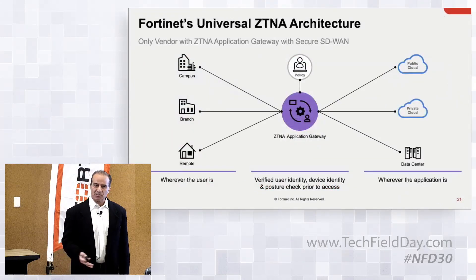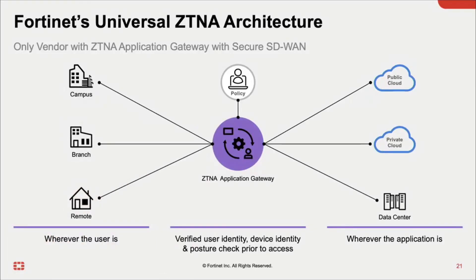To level set on terminology: universal ZTNA has three components — the agent, the policy engine, and the enforcer of that policy, which is the ZTNA Application Gateway. Users can be working from anywhere: remote, in the office, or moving back and forth. They're accessing applications that can also be anywhere. The ZTNA Application Gateway sits in the middle — it's part of the secure SD-WAN, part of the FortiGate product — and it enforces the policy, making sure a given user is supposed to access a given application.